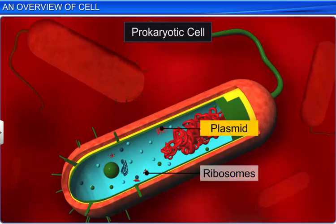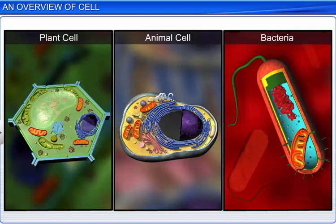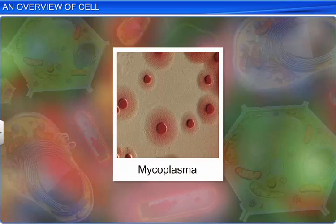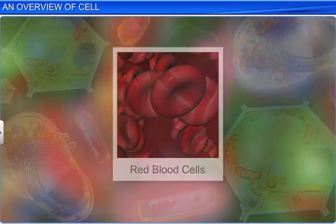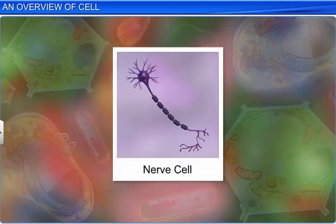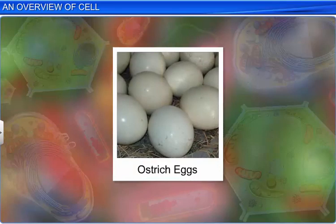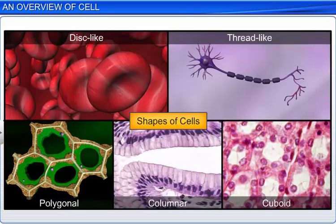Cells usually differ in size and shape. For instance, mycoplasma measure only 0.3 microns in length, whereas human red blood cells are about 7 microns in diameter, and nerve cells measure around 4 to 100 microns. Amazingly, the ostrich egg is the largest isolated single cell, and it measures 17 to 19 cm in length and 14 to 15 cm in width. Moreover, the shapes of cells range from disc-like to thread-like, and from polygonal to columnar and cuboid.